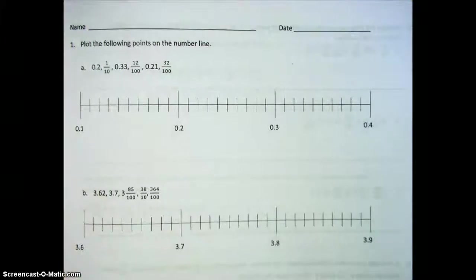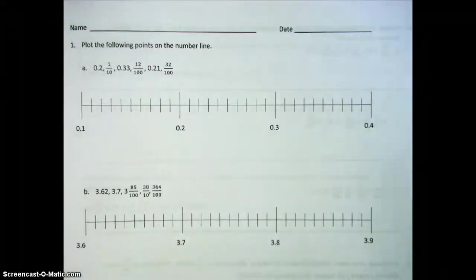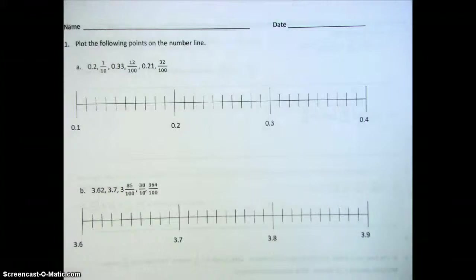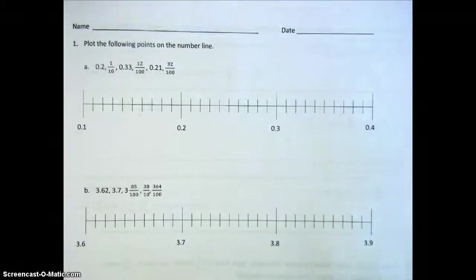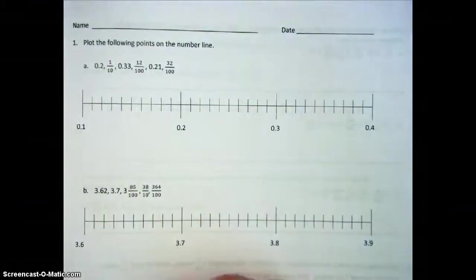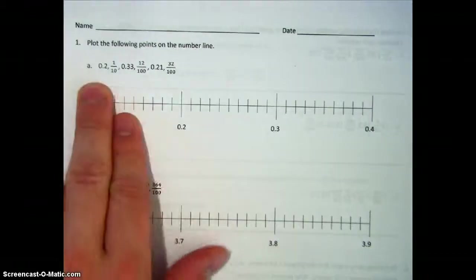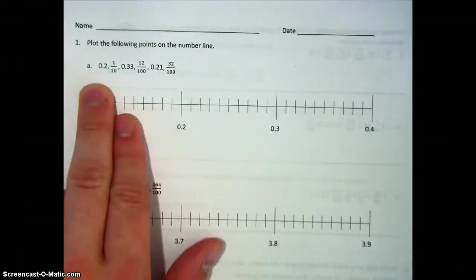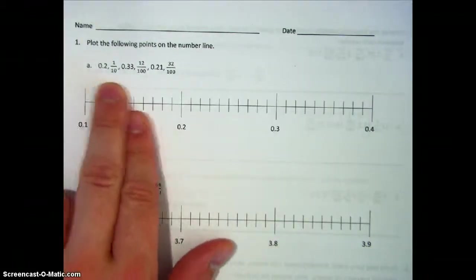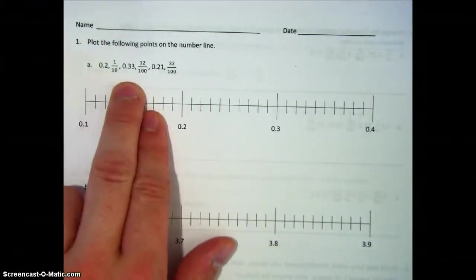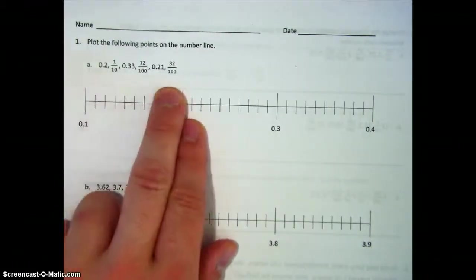Today we're on lesson 11. We're going to be comparing and ordering mixed numbers in various forms. We're going to first start off by using a number line and plot the following points on it. Looking at our list of numbers, we see that we have a mix of decimals and fractions.